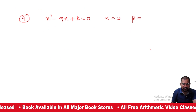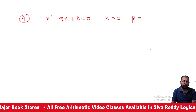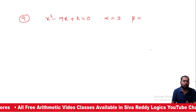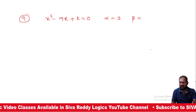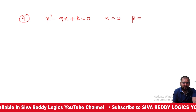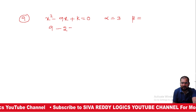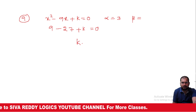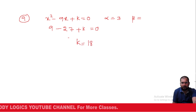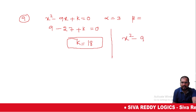x squared minus 9x plus k is equal to 0. If alpha is equal to 3, then beta is equal to what? We find one root: alpha = 3. Substituting: 9 minus 27 plus k equals 0, so k equals 18. The equation becomes x squared minus 9x plus 18 equals 0.